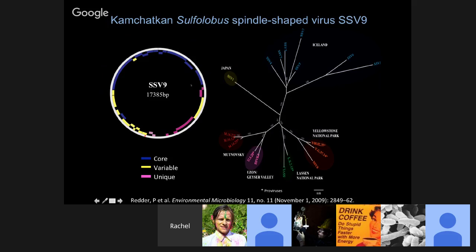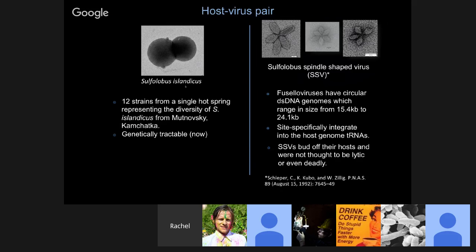Onto the SSV-9 genome, we've mapped the pan-genome of SSV, with core genes in dark blue, variable genes in yellow, and genes unique to this strain in pink. It has this core genome and variable genome, but we still don't know how it interacts with the hosts. This was a project of Maria Bautista. We're looking at 12 strains all isolated from a single hot spring in Kamchatka, Russia, and how they interact with one virus, SSV-9.